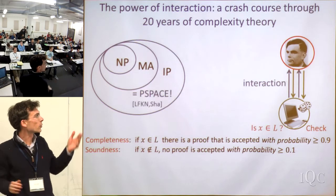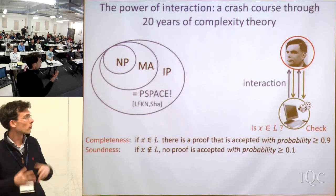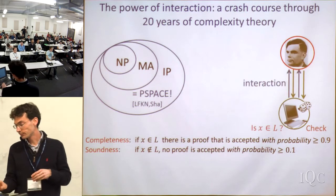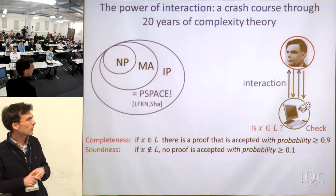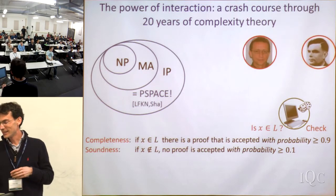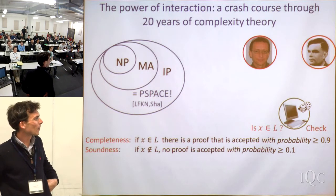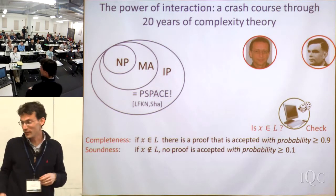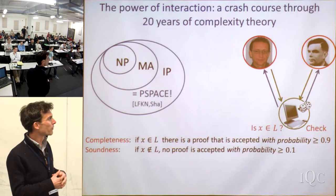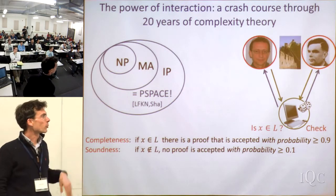It turns out IP is a bigger class. It was characterized in the 90s: IP equals PSPACE. You get something bigger just by letting the verifier interact with the prover. What else can we do? We've extracted as much as we could from one prover, so let's have two different provers instead. What's the point of having two provers? The most important restriction, of course, is that they don't talk to each other — if they could, they'd really just be the same as one prover, since these provers are infinitely powerful.